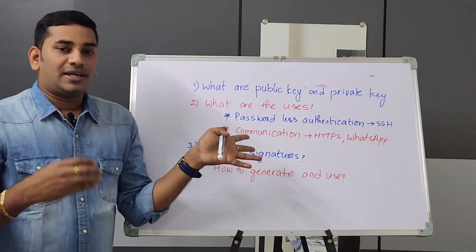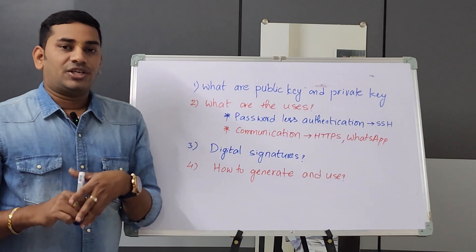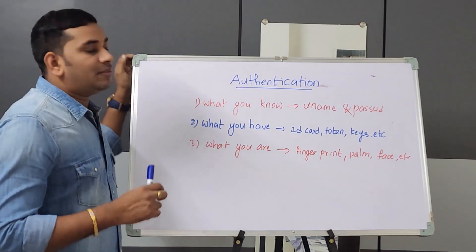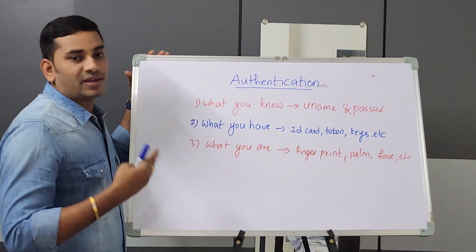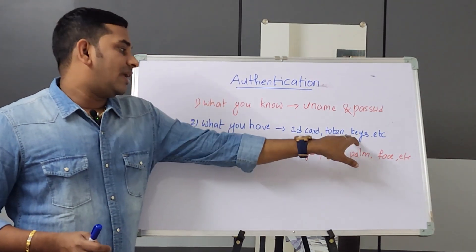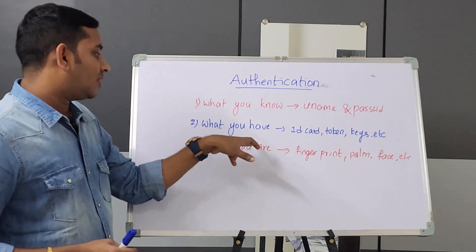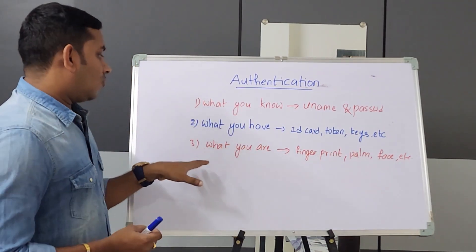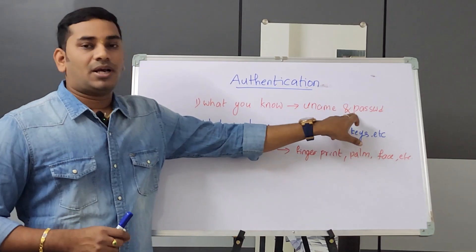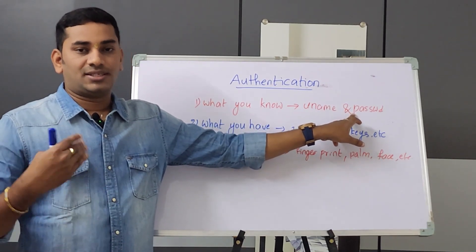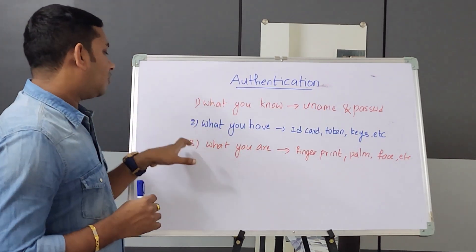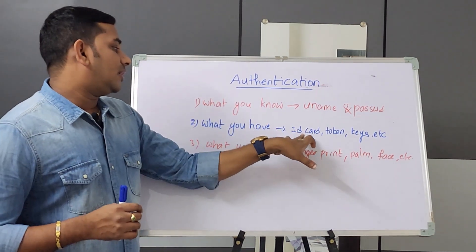For passwordless authentication, let's discuss the basic authentication methods. There is 'what you know' — like a username and password, or Facebook user ID and password. There is 'what you have' — like an ID card, token, or a public key and private key. And there is 'what you are' — like fingerprint, palm, or face recognition. Username and password is the weakest authentication mechanism, because people tend to choose easy-to-guess passwords.